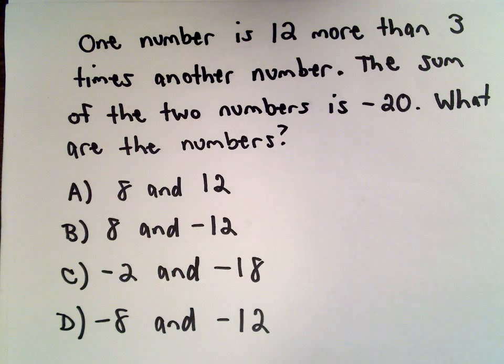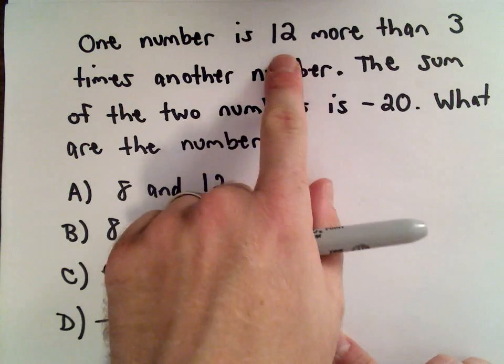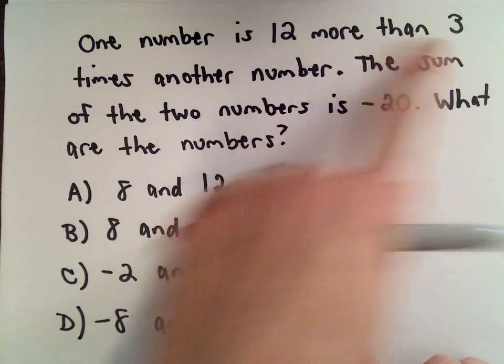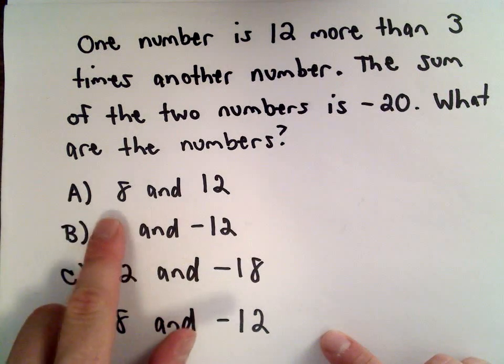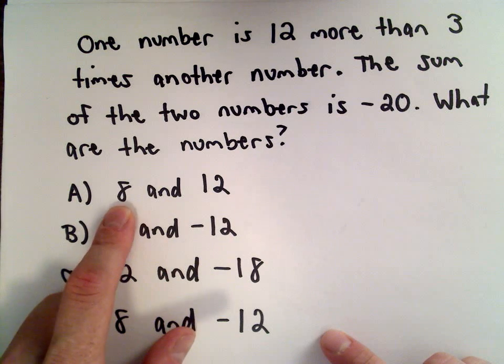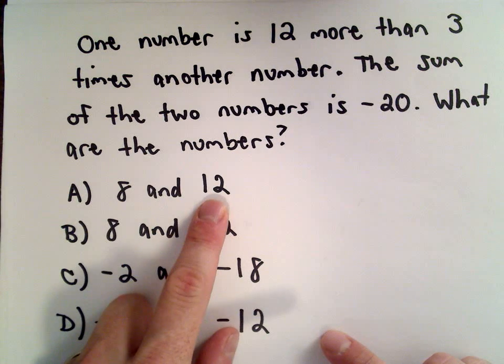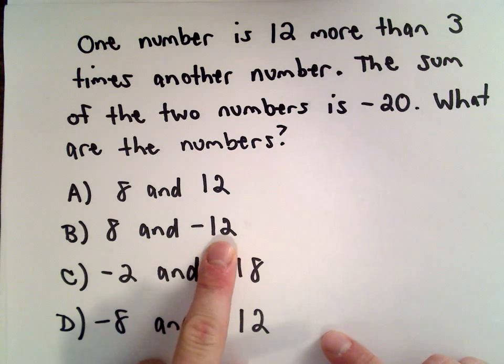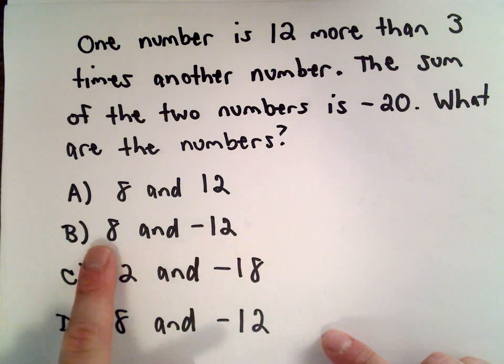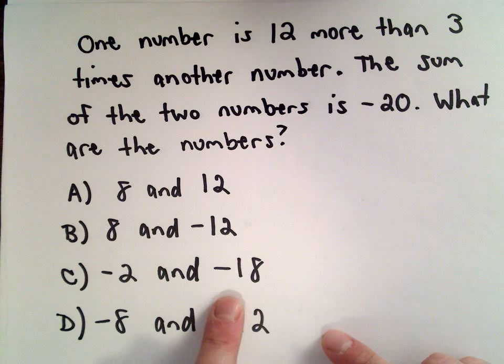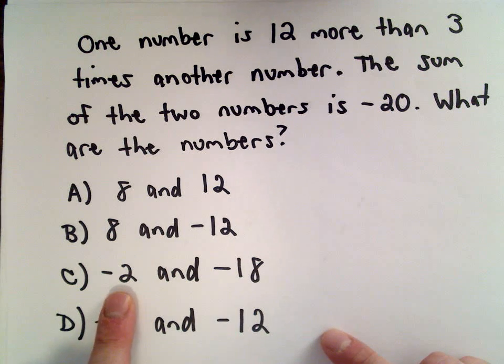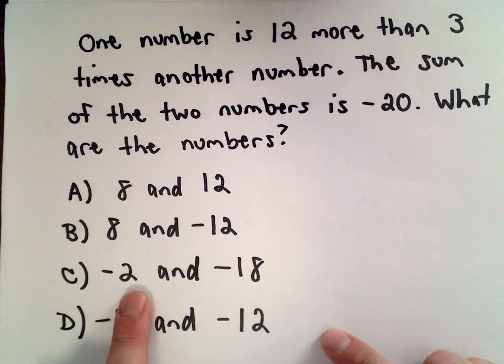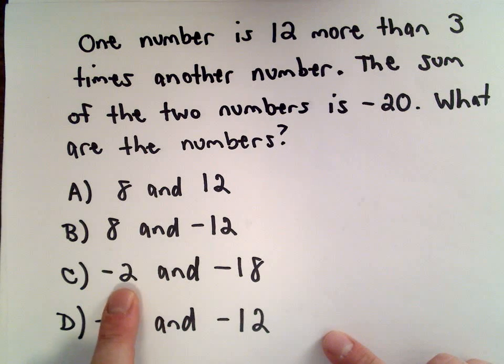You could brute force check this one. It says one number is 12 more than 3 times the other. For part A, if you take 3 times the smaller one and add 12, you're not going to get positive 12. Part B, if you take 3 times the smaller number and add 12, you're not going to get the other one. Actually, I take that back—but no, even Part C still doesn't work.